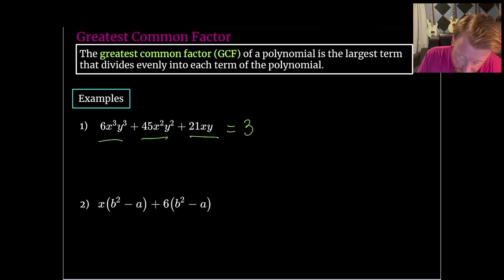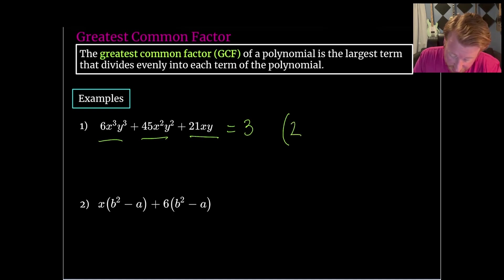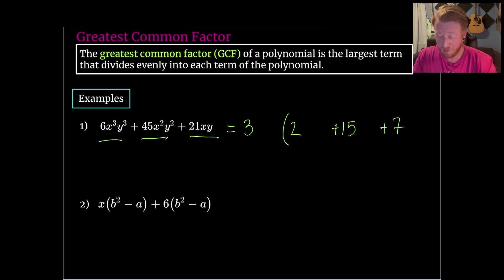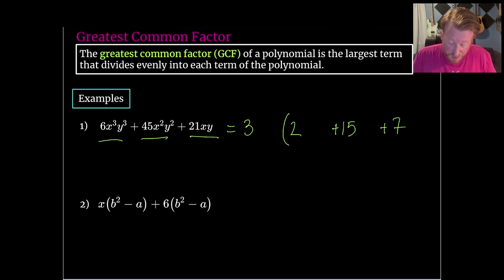So I will factor that 3 out and now think about what's left behind. In order to get back to the 6 I'm going to need a 2; in order to get to the 45 I'm going to need a 15; and in order to get back to the 21 I'm going to need a 7. So that's just looking at the coefficients, and I'm leaving some space here to start filling in the details for the variables as well.